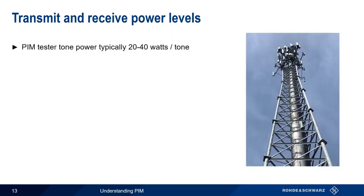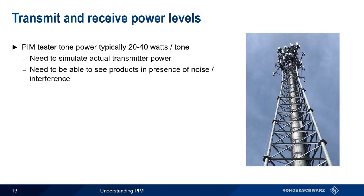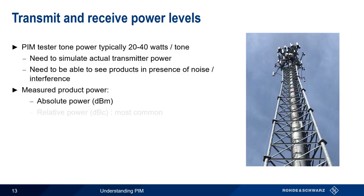Most commercial PIM testers have a transmit power in the range of tens of watts per tone, with both tones transmitted at the same power level. There are two main reasons for using relatively high power levels: first, we need to simulate power close to actual transmitter power, and modern cellular base stations usually have transmit powers in the tens of watts. Second, we need to be able to see any generated intermodulation products in the presence of interference or a high noise floor, and more power in the fundamentals means more power in the products. Results can be expressed as absolute power in dBm, or relative to the fundamental in dBc, or decibels down from the carrier.